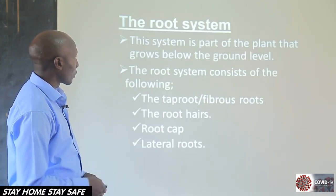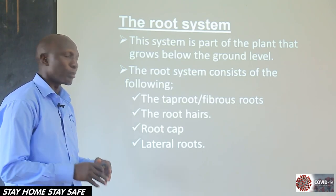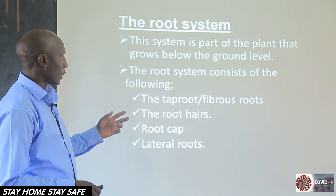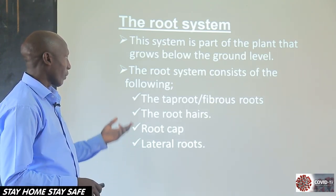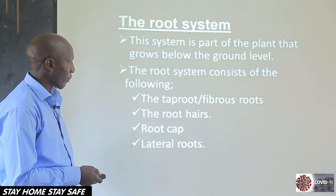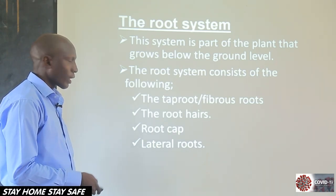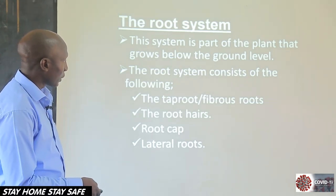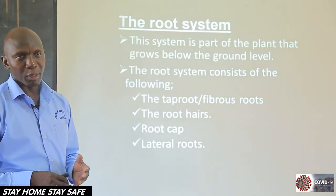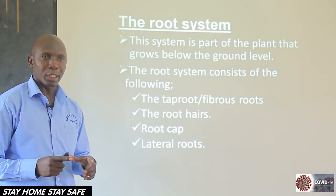Then we shall look at the root system. The root system is the part of the plant that grows below the ground level. This one is comprised of parts like the tap root system and the fibrous root system. We also have the root hairs, the root cap, and lateral roots. So those are the two systems that make up a flowering plant: the shoot system and the root system.